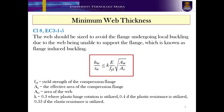To design a plate girder, firstly you need to determine the minimum allowable web thickness. The proposed minimum web thickness of the plate girder should be referred to Clause 8, EC3 Part 1-5. The web should be sized to avoid the flange undergoing local buckling due to the web being unable to support the flange, which is known as flange induced buckling. Therefore, the criteria given in Clause 8, EC3 Part 1-5 must be used.